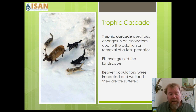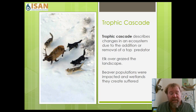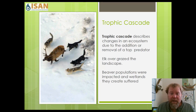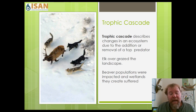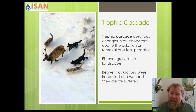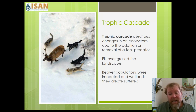A trophic cascade is defined as changes within an ecosystem due to the addition or removal of a top predator. With the removal of the Yellowstone wolves, the elk overgrazed the grasslands, prairies, and riverbanks. When they overgrazed the riverbanks, this was particularly harmful to the beavers, because beavers are also a keystone species. When the elk overgrazed the aspen, cottonwood, and willow, it took away the food source for the beavers, and beavers create wetlands.